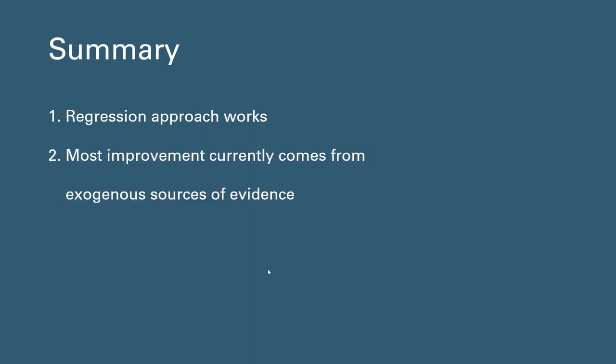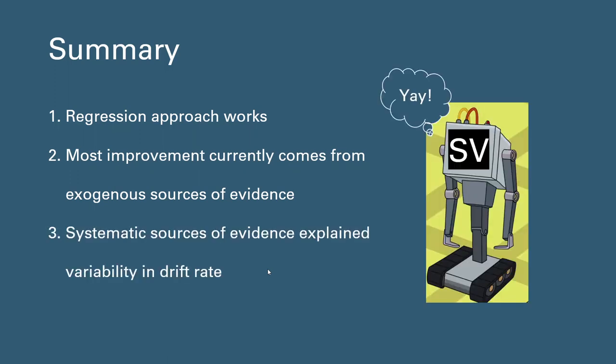Just a short summary of the findings. So far, we have found that using trial by trial sources of evidence to constrain drift rate in DDM actually improved the model prediction of the corresponding effects. But the major improvement in the model fit seemed to be contributed from the exogenous factors alone. And finally, we have found that systematic sources of evidence explained the drift rate variability.